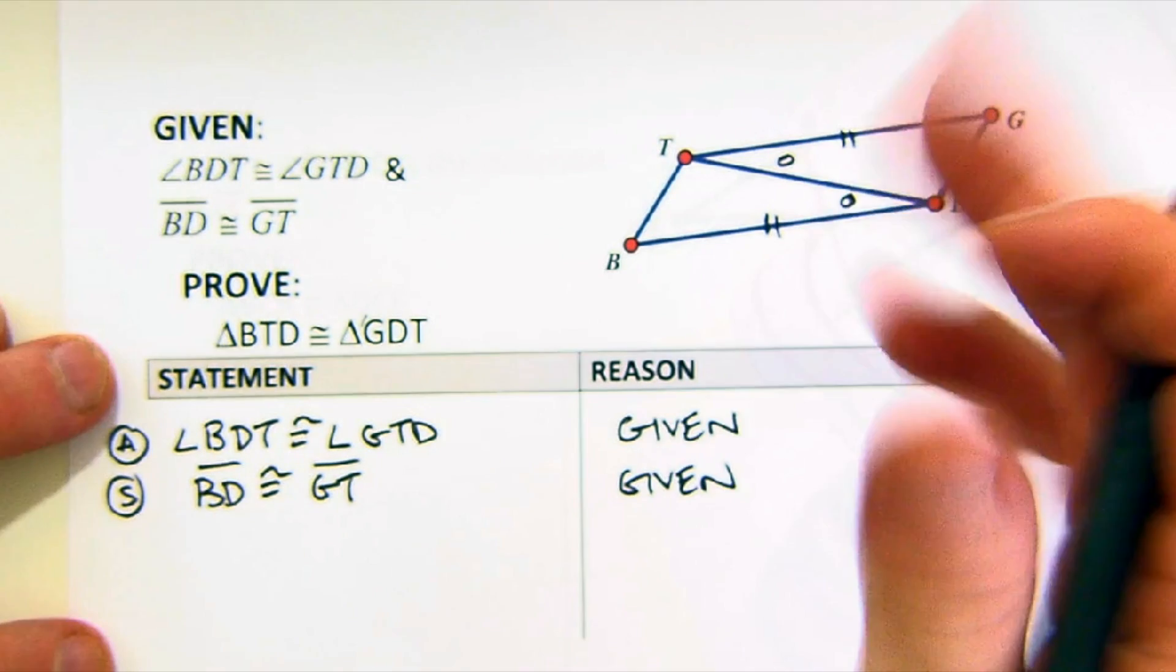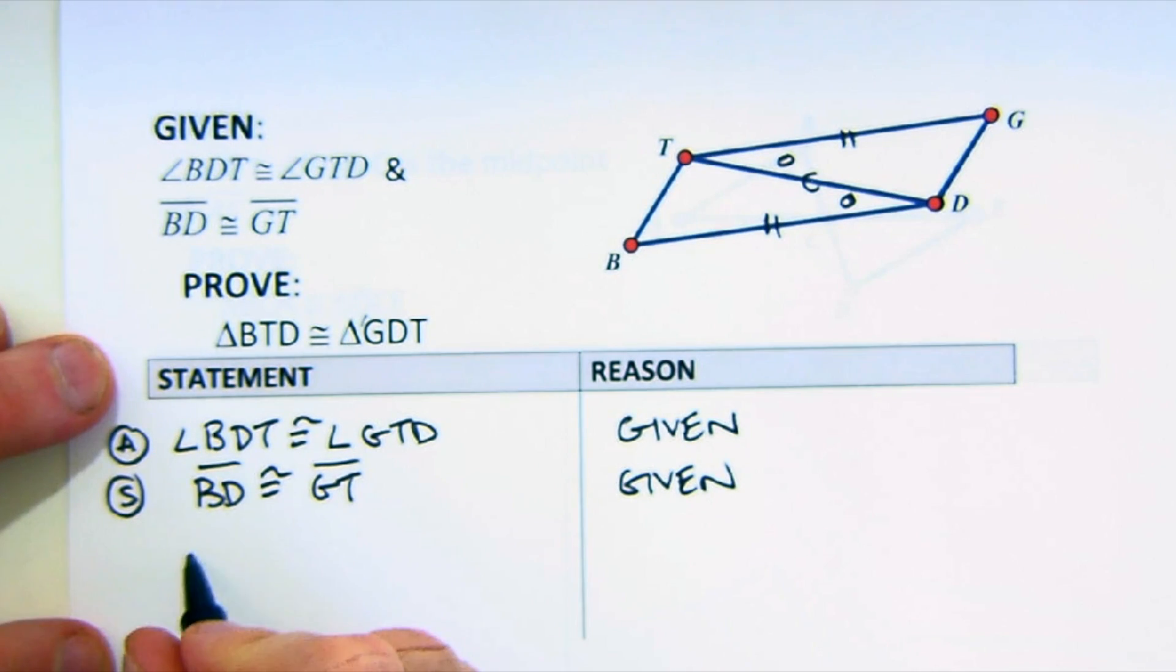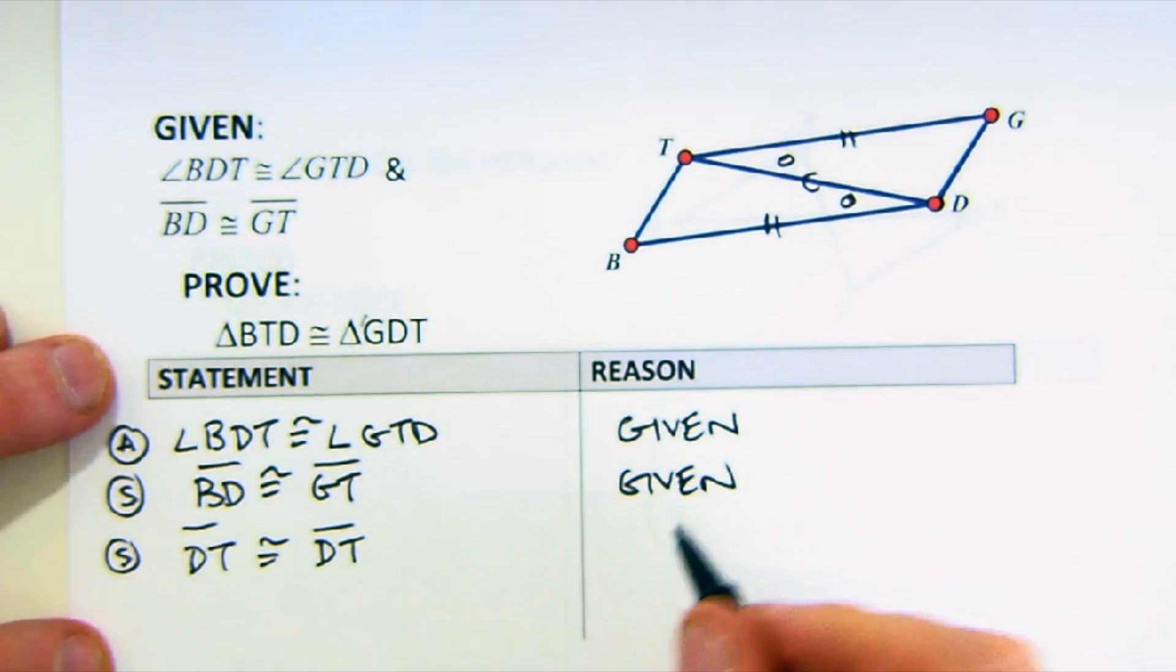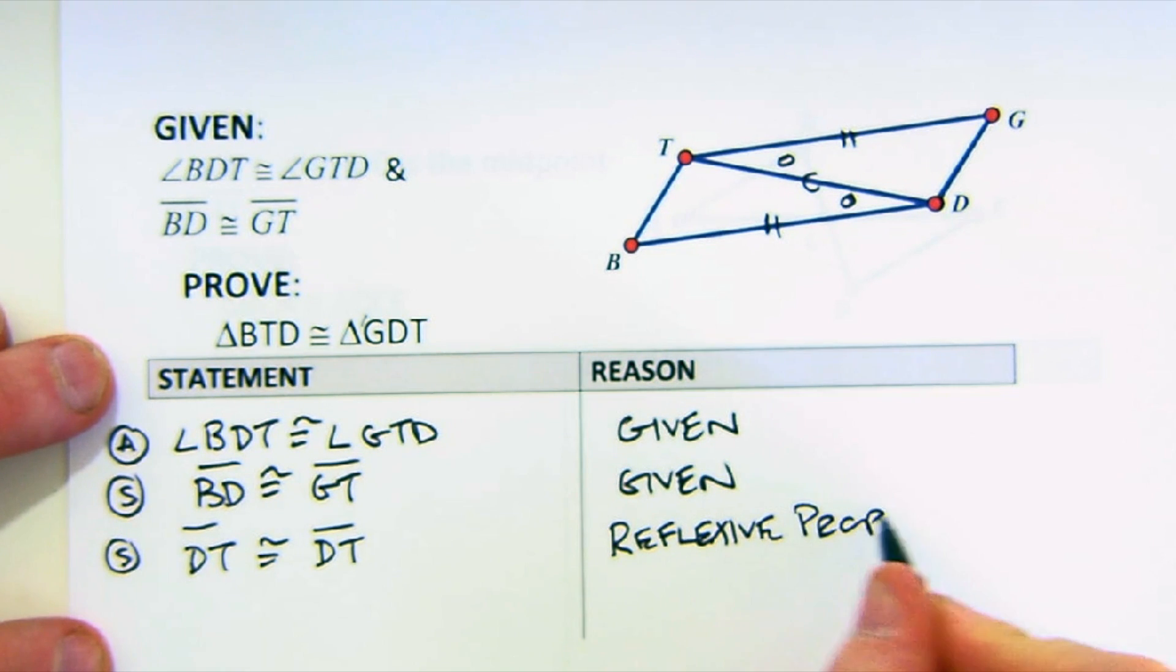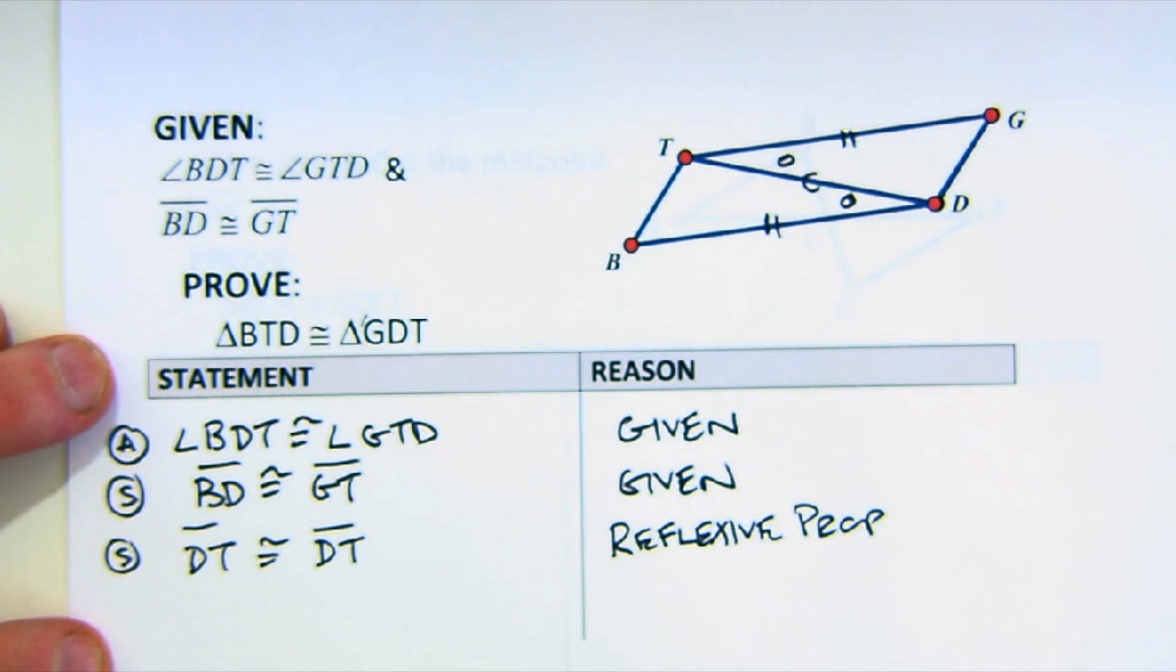And one of the typical tricks, if you want to call it that, is a common side. So in other words, DT is congruent to DT. That's a side. And even though I call it a common side, the proper mathematical term is the reflexive property. And basically, the reflexive property says something is always congruent to itself.